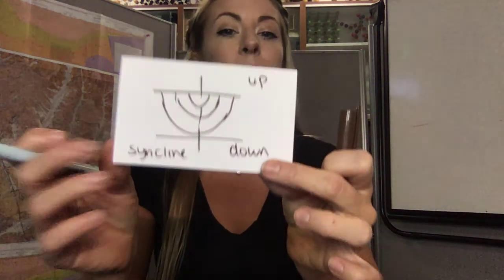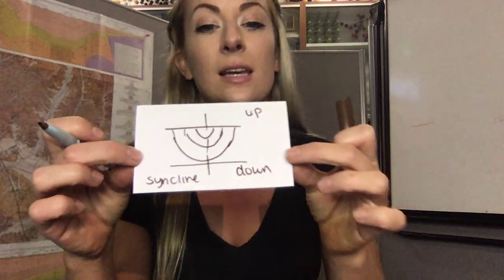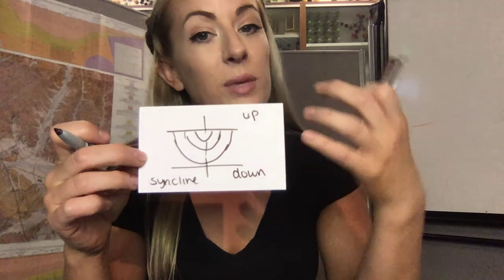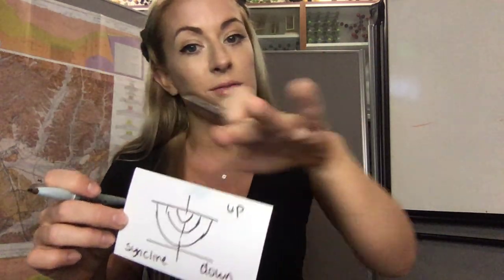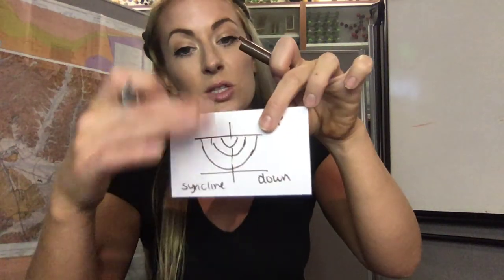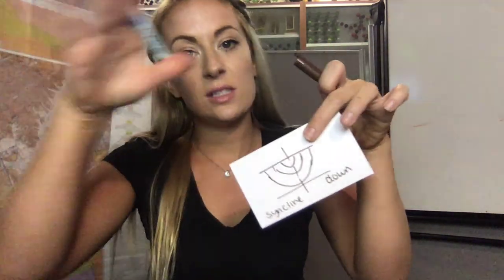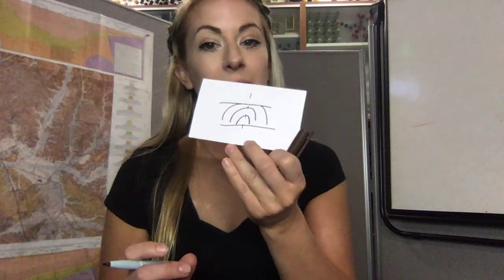I like to think of a syncline being like a sink, because if these were to be scooped out, you have these downward depressions. The opposite of a syncline, but still created with compressional forces, would be an anticline.